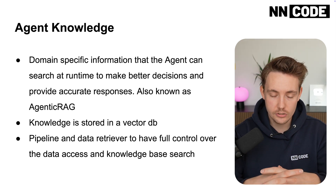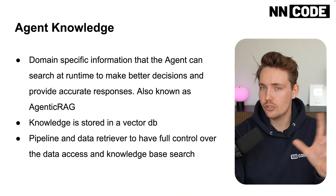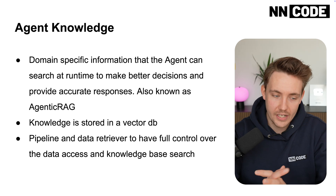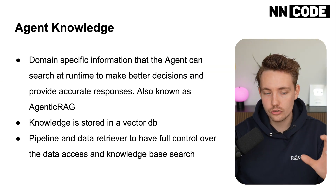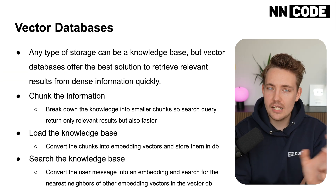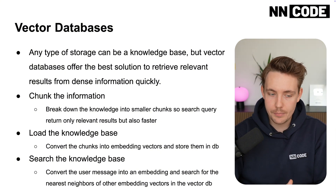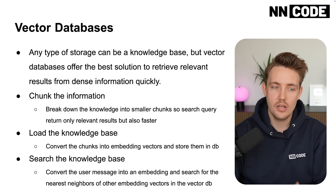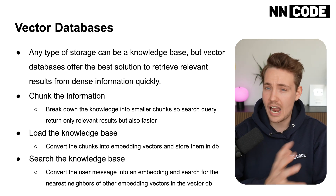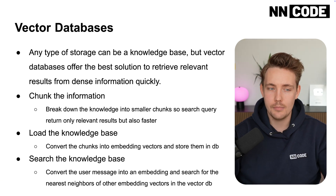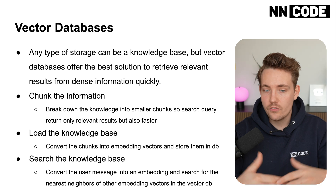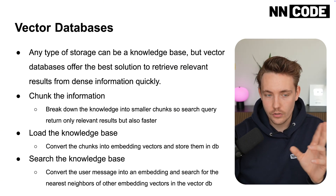You can even speed retrieval up with GPUs, which are optimized for vector calculations. It's essentially cosine similarity — the cosine distance between two vectors — which is the similarity search most often used. We put results into a vector database and have a pipeline with a data retriever to maintain full control over data access and knowledge base search in these agentic knowledge approaches. Any type of storage can be a knowledge base, but we need to convert it into vector embeddings for the best retrieval of relevant results from dense information quickly.